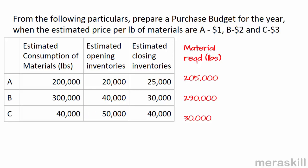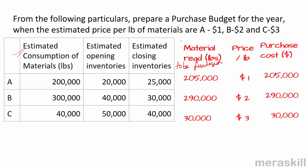For material C: 40,000 will be consumed, but I already have opening inventories of 50,000 and need a closing inventory of 40,000, so only 30,000 needs to be purchased. Applying rates of $1, $2, and $3 respectively gives values of 205,000, 290,000, and 30,000 — totaling a purchase budget of $525,000.